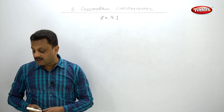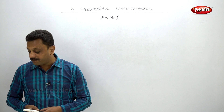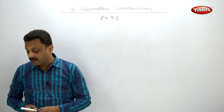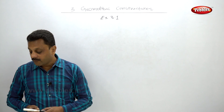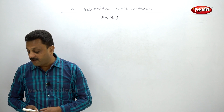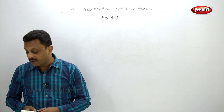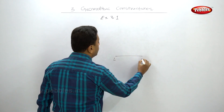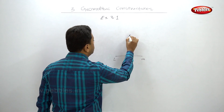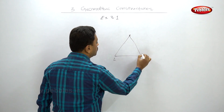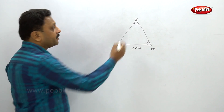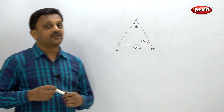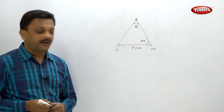Third example: construct the circumcircle of triangle KLM in which LM is 7 centimeters, angle K is 60 degrees, and angle M is 55 degrees. Drawing the rough figure first: LM is the base and K is the apex. Now, constructing this triangle is not straightforward because the side lengths adjacent to the angles are not given.